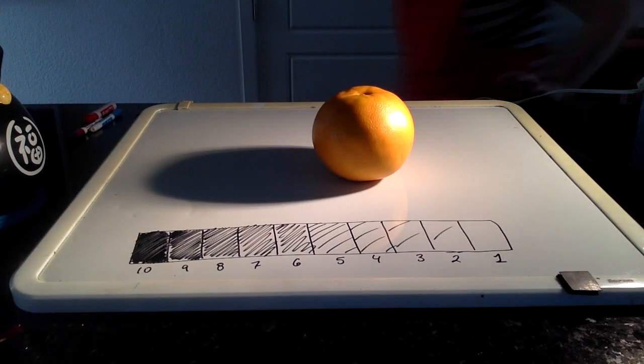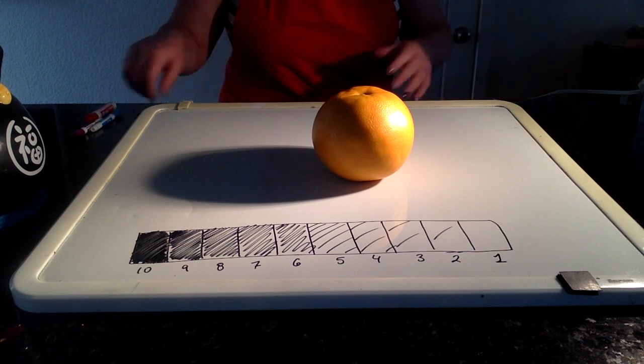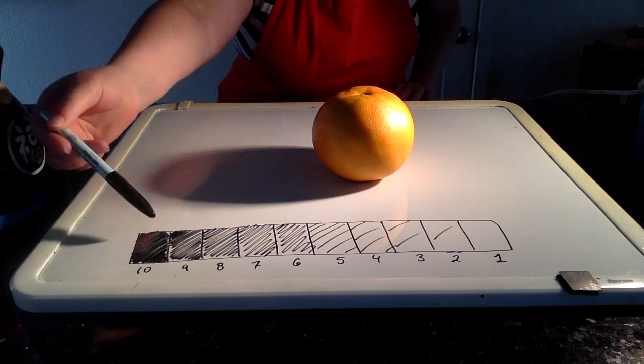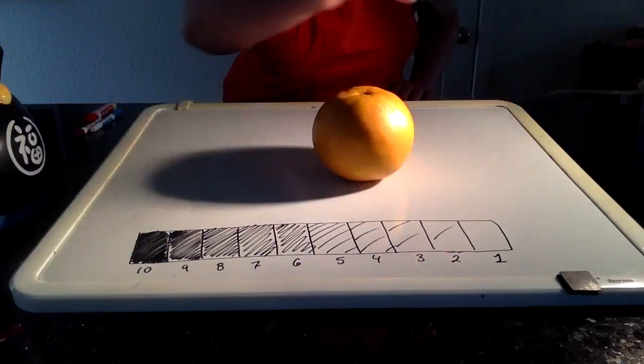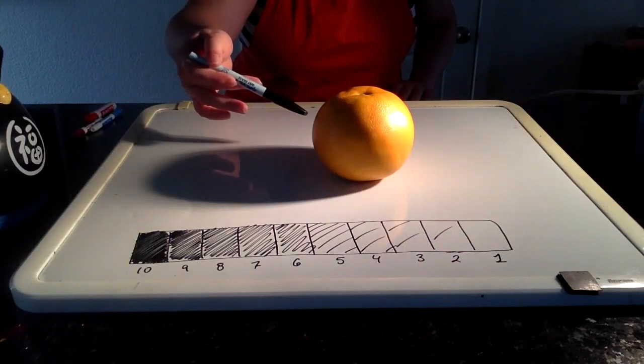Now in this example I'm using my dry erase board to show you a different scale from dark to lightest, and we'll start dissecting our object in just a few moments.